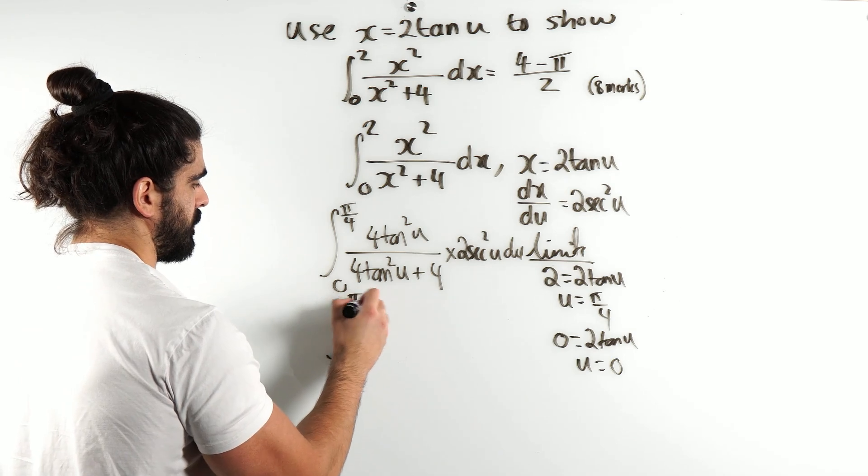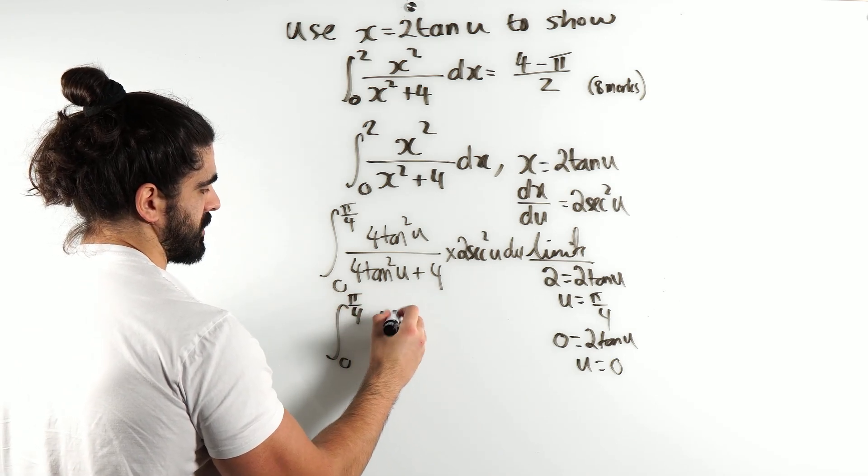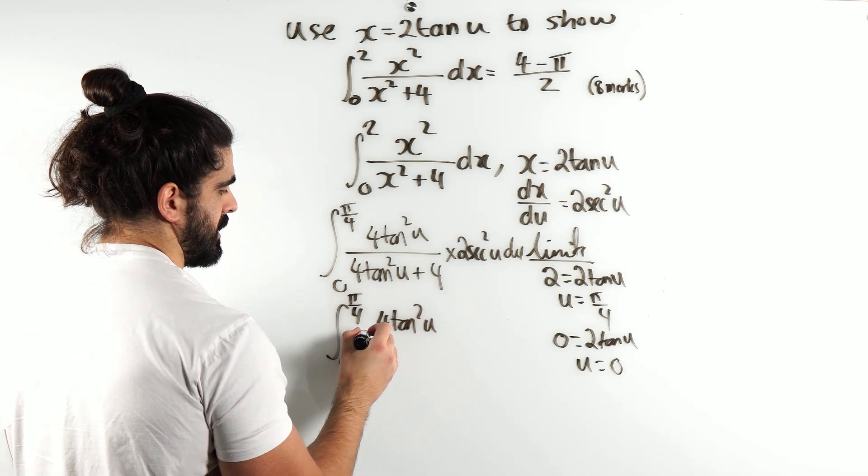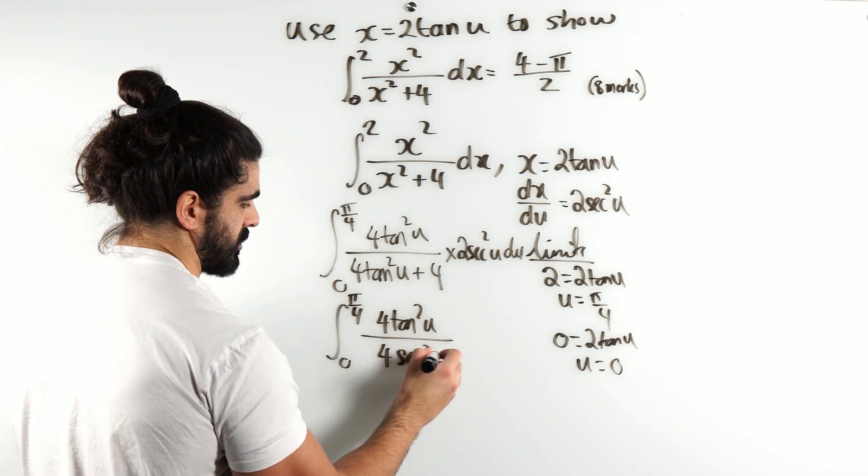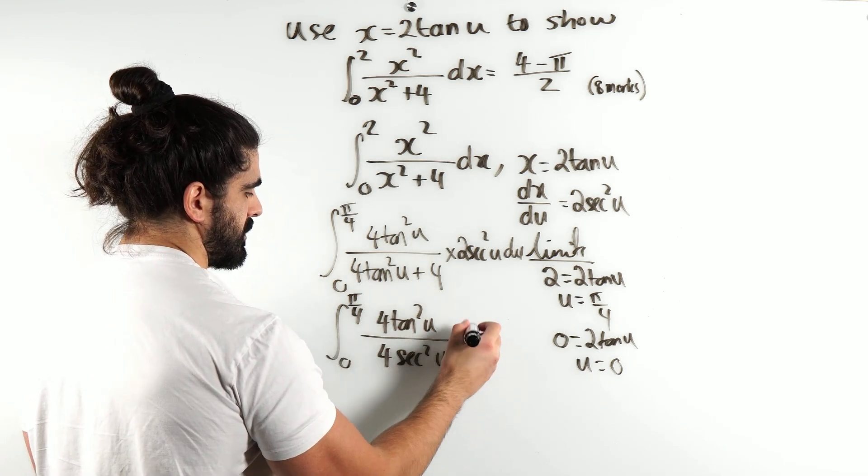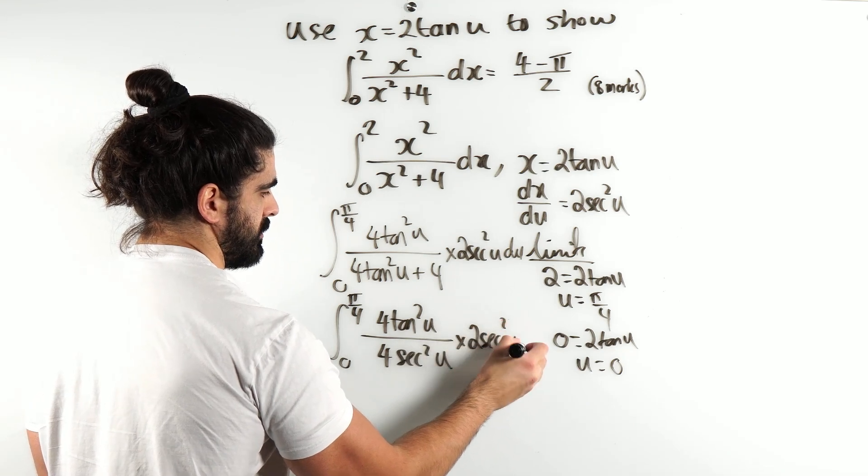So we have between 0 and π/4, we have 4tan²(u) divided by 4sec²(u) times 2sec²(u)du.